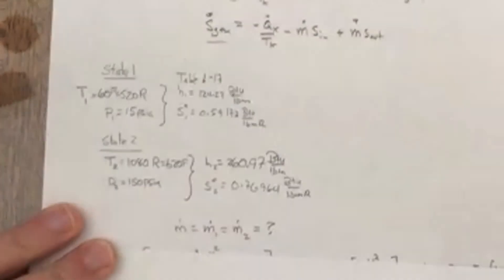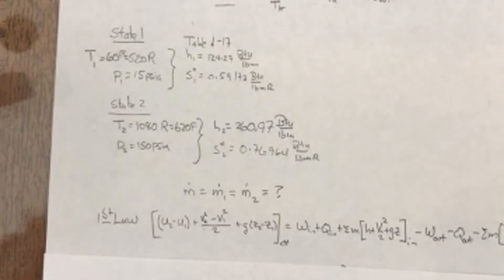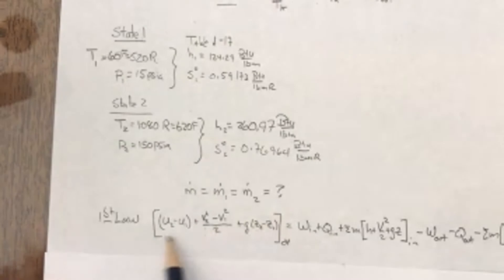So I'm left with kind of two unknowns, S gen and M dot, so I can write another equation, right? Every time you have an unknown, hopefully you can write an equation to solve for it.